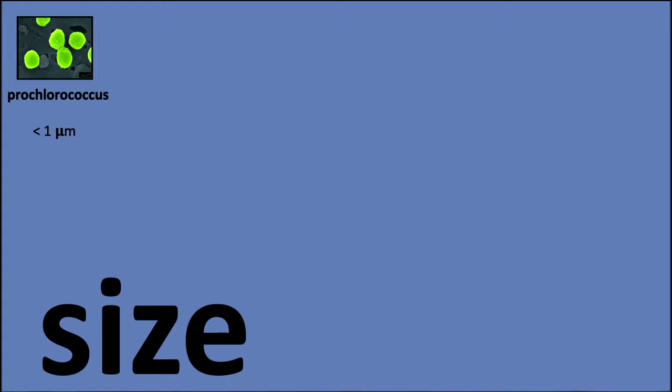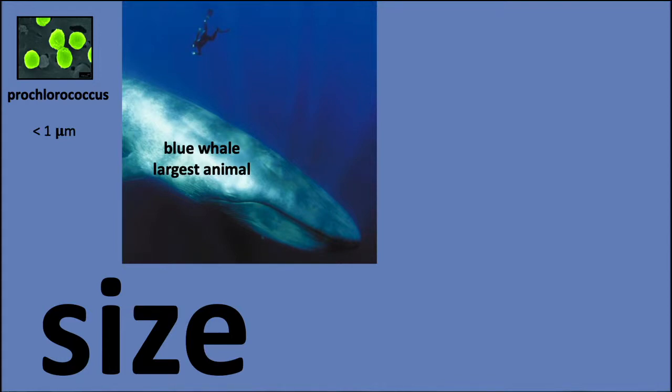Here's Prochlorococcus — it's very small, less than one micron (about 0.6 microns). Remember, a micron is 10 to the minus 6 meters, or a thousandth of a millimeter. The largest animal on Earth is the blue whale, which is much, much bigger than Prochlorococcus.